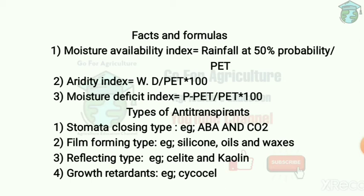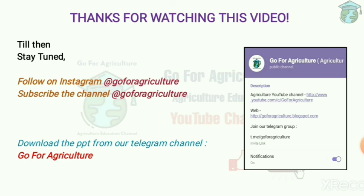Examples of reflecting type anti-transpirants are Silite and Kaolin. Next are growth retardants - chemicals that reduce shoot growth and increase root growth to resist drought. An example is Cycocel.